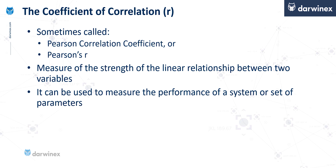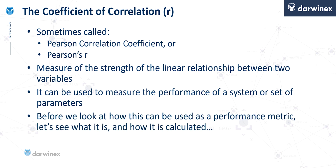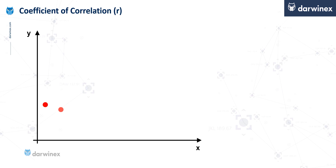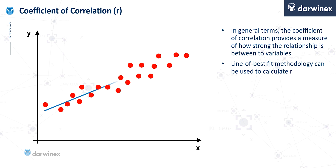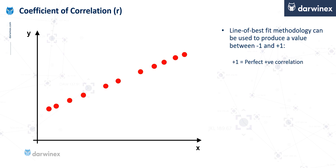And when used in conjunction with an equity curve, it can be used to measure the performance of a system or a set of parameters. Before we look at the use of Pearson's r in this way, let's first take a look at how it's calculated. The correlation coefficient provides a measure of how strong a relationship is between two variables. The underlying calculation relies on the principle of the line of best fit. And when all of the observable points have a perfect positive correlation, the Pearson r has a value of plus one.